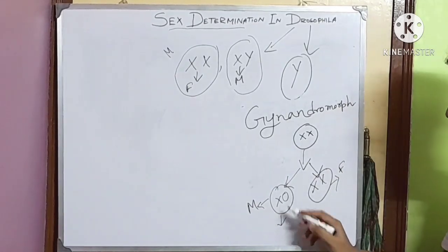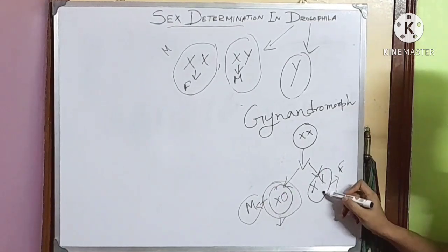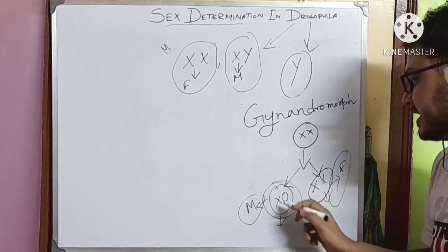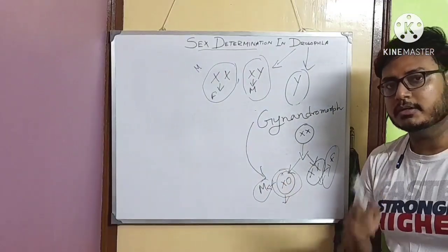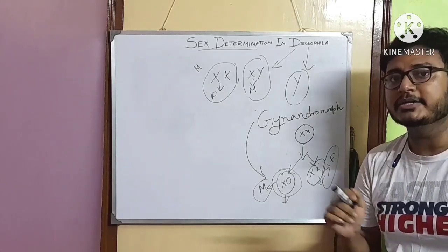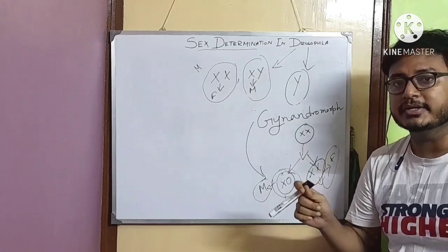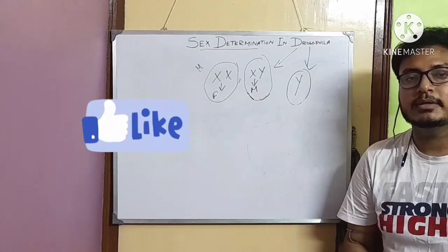And the descendant of this cell will be female. And this condition is called Gynandromorphs. So Gynandromorphs occur due to non-disjunction or chromosomal lagging during mitosis in the zygote or in the early development of the embryo.